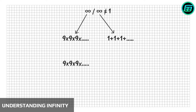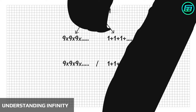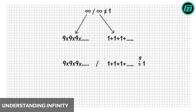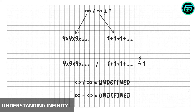And 9 times 9 times 9 forever divided by 1 plus 1 plus 1 forever equal to 1? We don't know, because the operations never end. Therefore, infinity divided by infinity and infinity minus infinity are undefined.